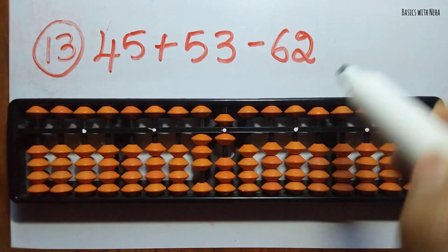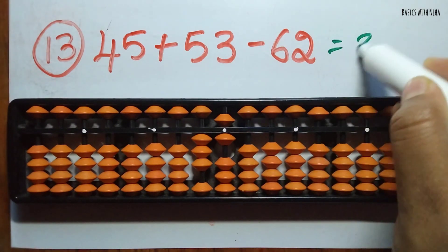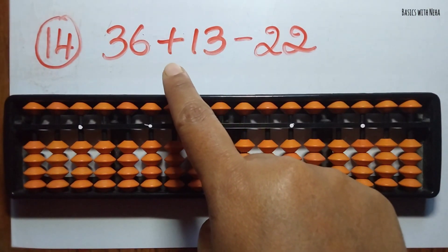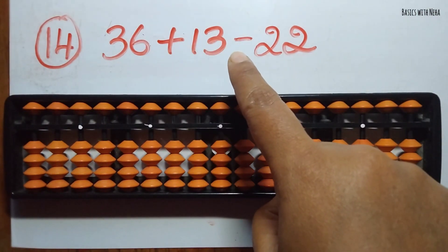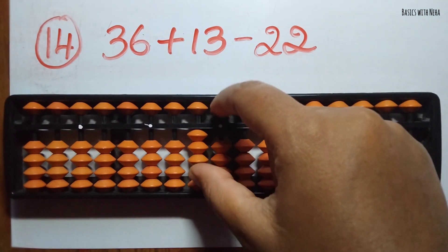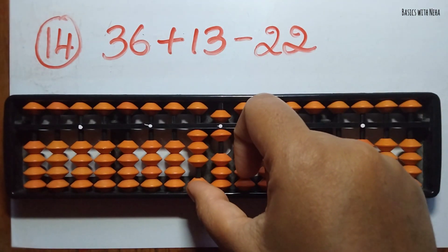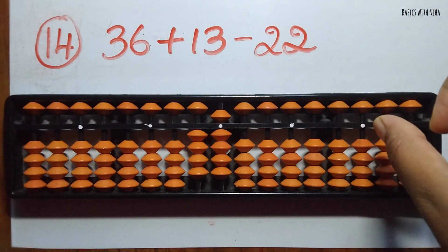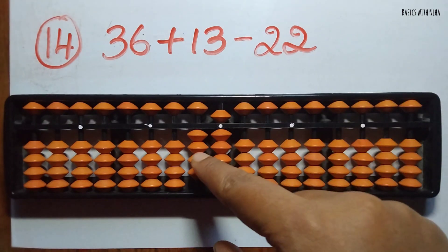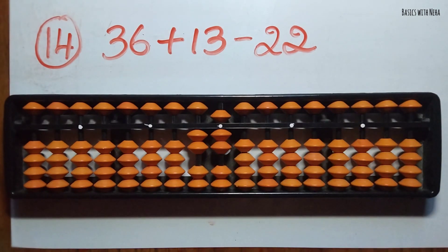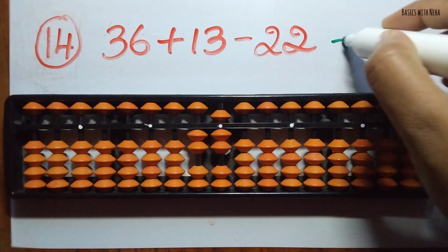The fourteenth sum: 36 plus 13 minus 22. First take 36, now add 13 — add 1 in the 10's rod and 3 in the 1's rod. Minus 22 — you can minus 2 in the 10's rod and minus 2 in the 1's rod directly. The answer is 27.